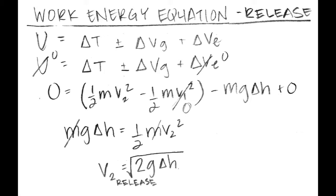There are no external forces in the system, so it is a conservation of energy equation. Therefore, U_NC equals zero, as well as the initial velocity since the system starts from rest. Then, simplify and solve for v2, the final velocity at release.